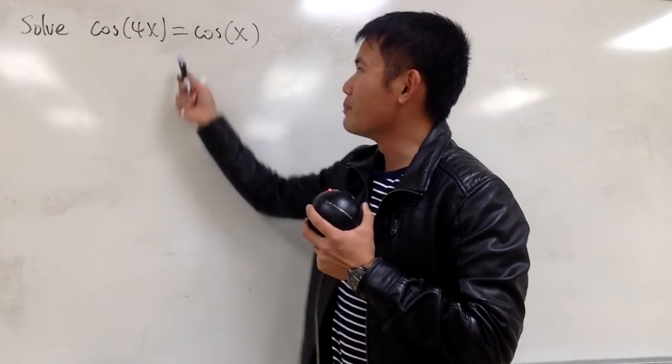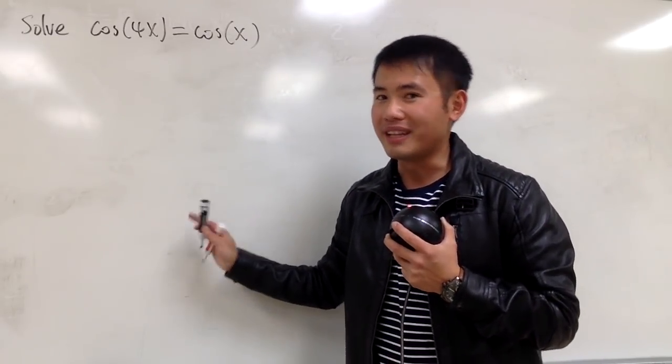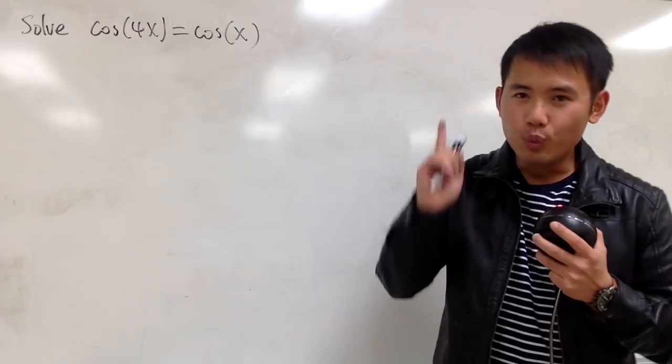Do not just cross out the cosine on both sides and say 4x equals x, and say 3x equals 0, and say x equals 0, and that's it. No, that's only one of the solutions.